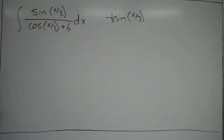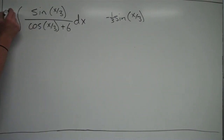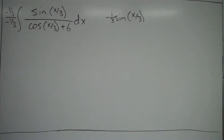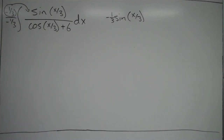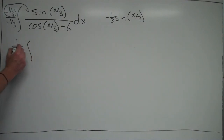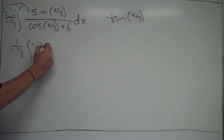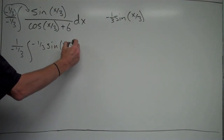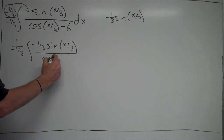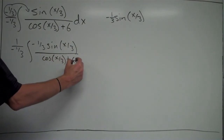I have sine on top, and I just need it to be negative 1/3 sine. So I'm going to do a negative 1/3 over negative 1/3 — multiplying by 1, not changing the value at all. I'll bring the negative 1/3 inside, so outside my integral I'll have 1 over negative 1/3, and on the inside I'll have negative 1/3 sine(x/3) all over cosine(x/3) plus 6, dx.